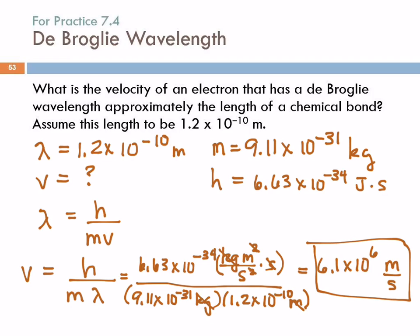Is that a reasonable speed for an electron? Electrons move quickly — 6 × 10⁶ meters per second seems reasonable. If we got 6 × 10⁻¹² meters per second, that would not be reasonable; electrons just going at a snail's pace is not reasonable.